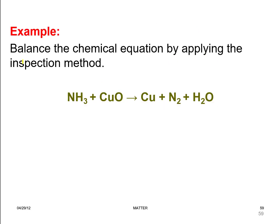Let's apply the inspection method to an example: ammonia reacts with copper oxide to produce copper, nitrogen gas, and water. First, we balance the metal — copper. On the left side we have one mole of copper, and on the right side we also have one mole of copper. So the copper atom is balanced.